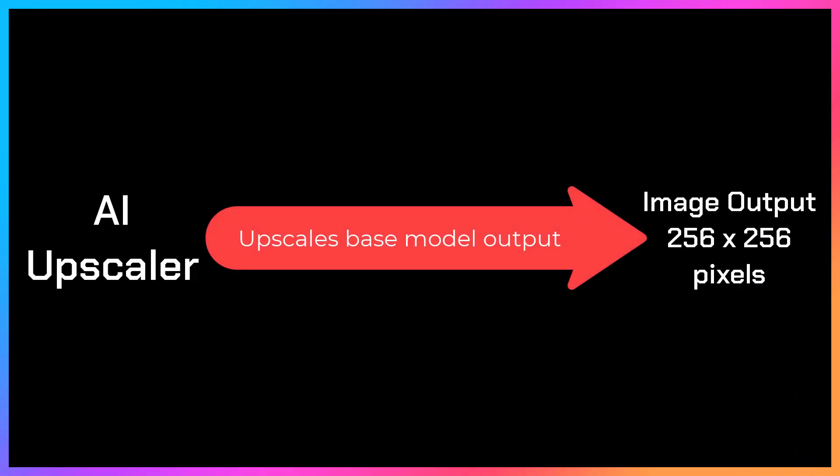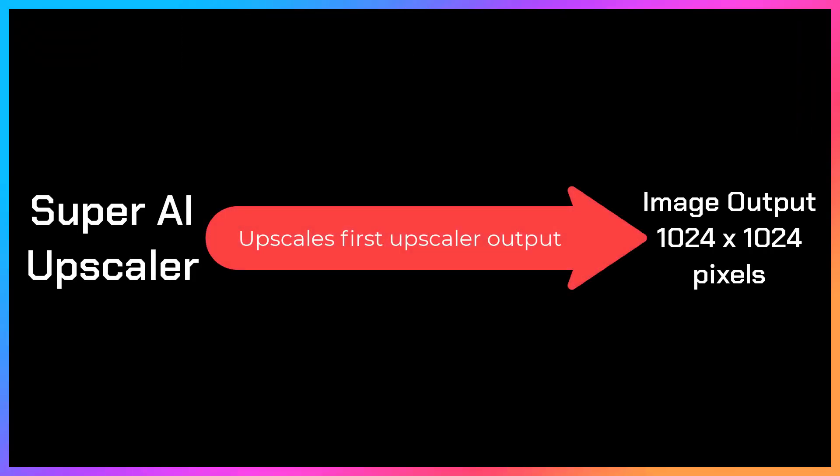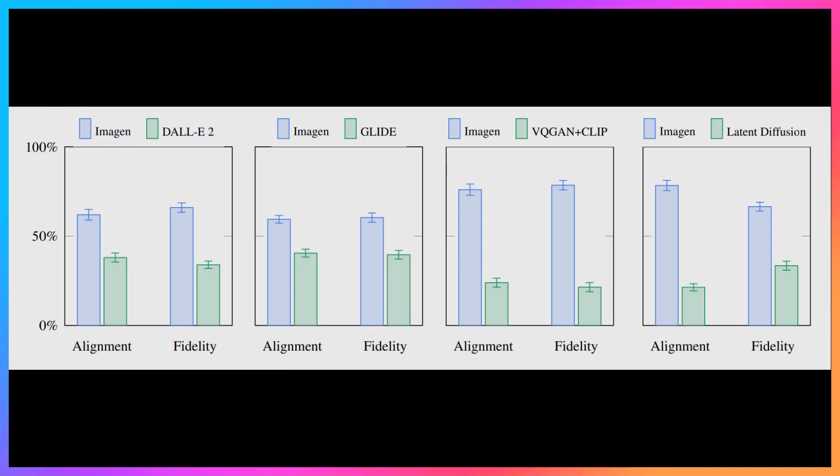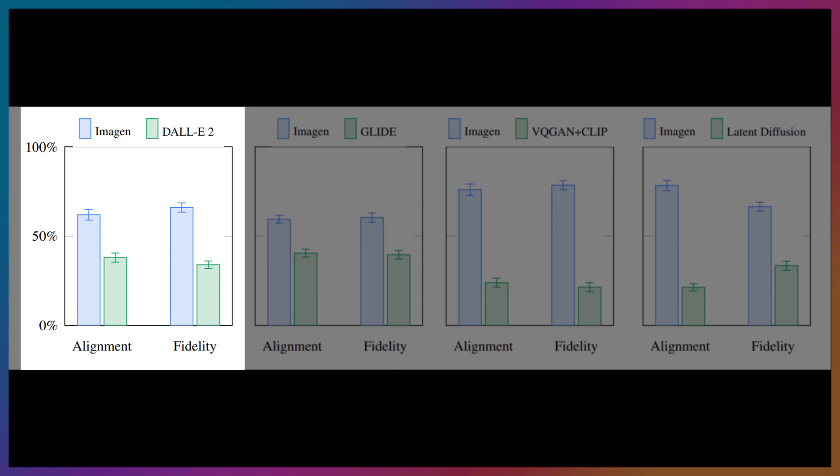How does Imagen work? This is interesting because it uses upscale models along with its base model for generating final images. The base model generates an image of 64×64 pixels, then another model upscales it to 256×256 pixels, and another super-resolution model upscales it again to 1024×1024 pixels — all without losing quality or detail. In fact, the fidelity of this model was much better than DALL-E 2 according to Google's official paper.